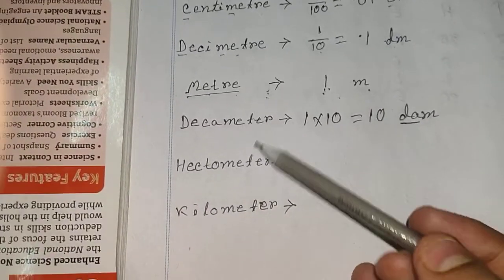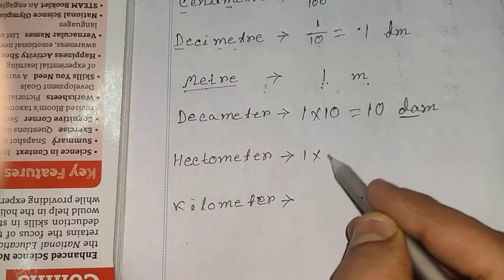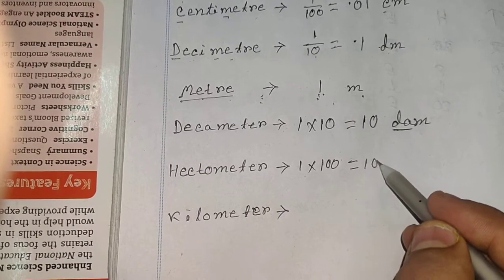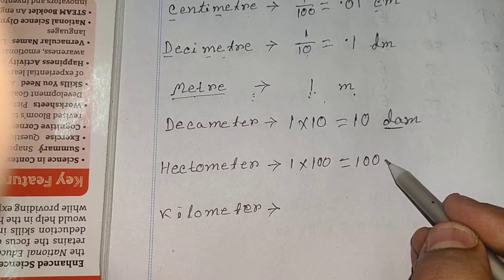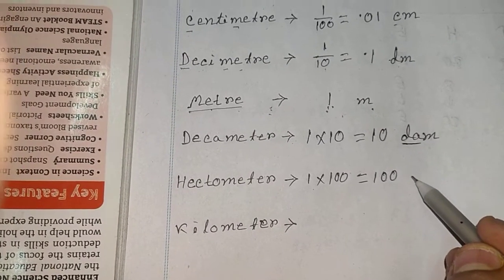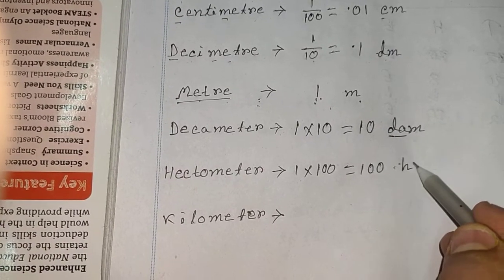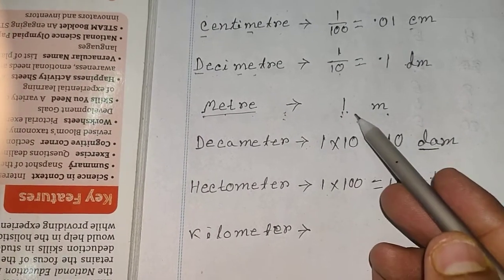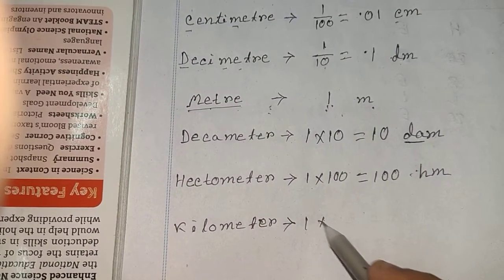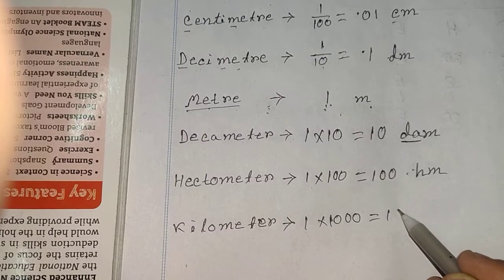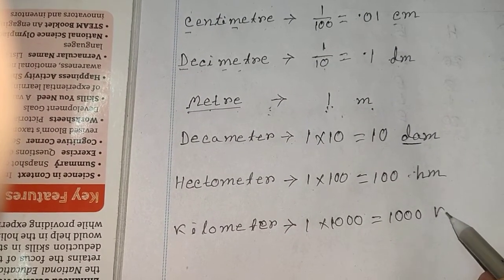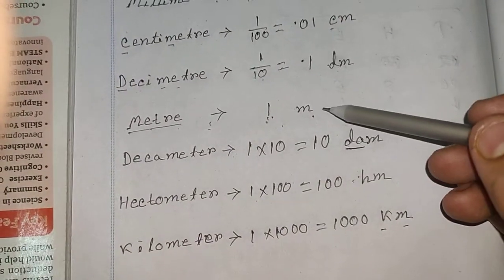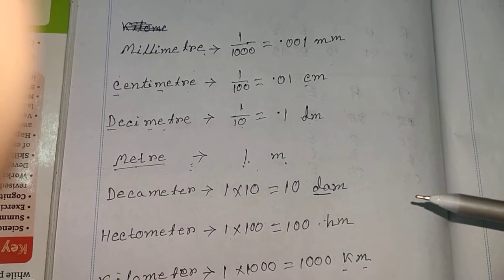Next is hectometer, which is larger than decameter — it is 100 times one meter, so we multiply by 100 to get 100. And kilometer is 1000 times one meter, so we multiply to get 1000. The short form is km — that is kilometer.